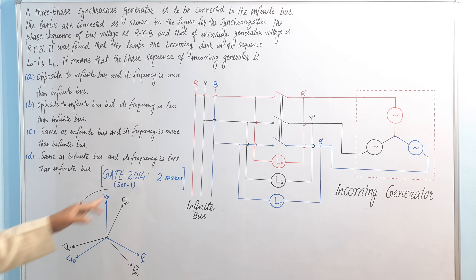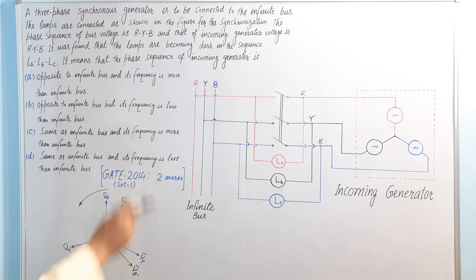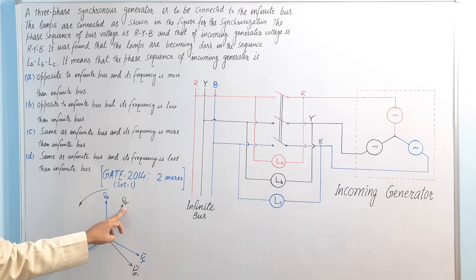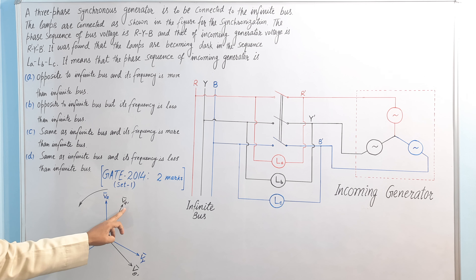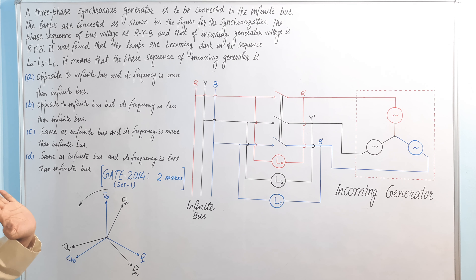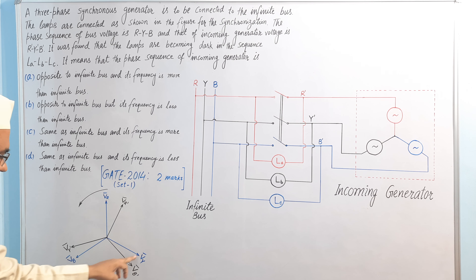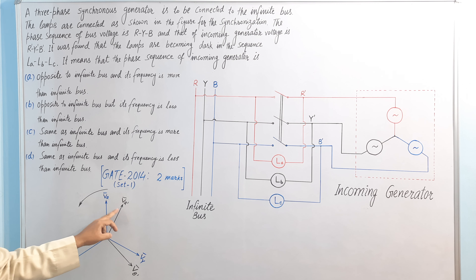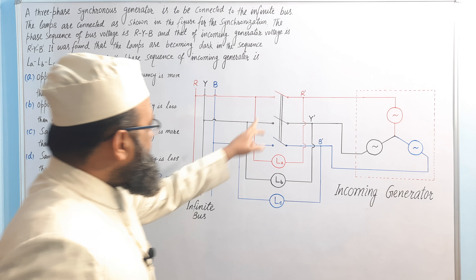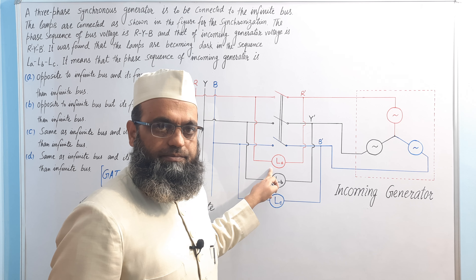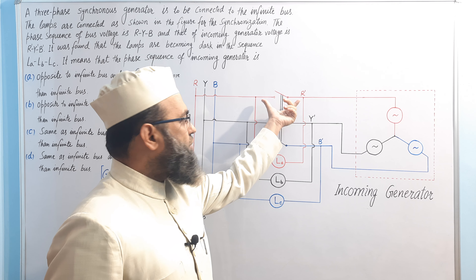The phase sequence of the incoming generator is drawn opposite to RYB. For the infinite bus it is RYB, but for the incoming generator this is R-dash, B-dash, Y-dash — not R-dash, Y-dash, B-dash. So opposite to RYB, this is R-dash, B-dash, Y-dash. If option one is correct, this phasor will cross the other at the same time — when Vr-dash coincides with Vr, lamp La will be dark, meaning voltage drop across those two points will be zero.